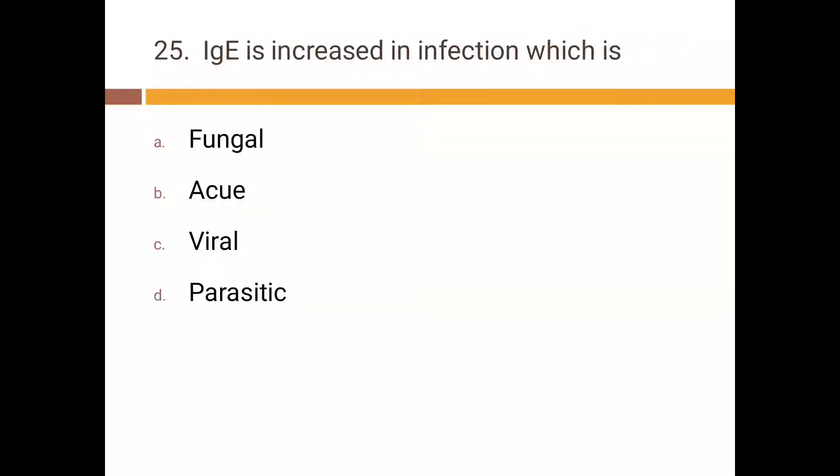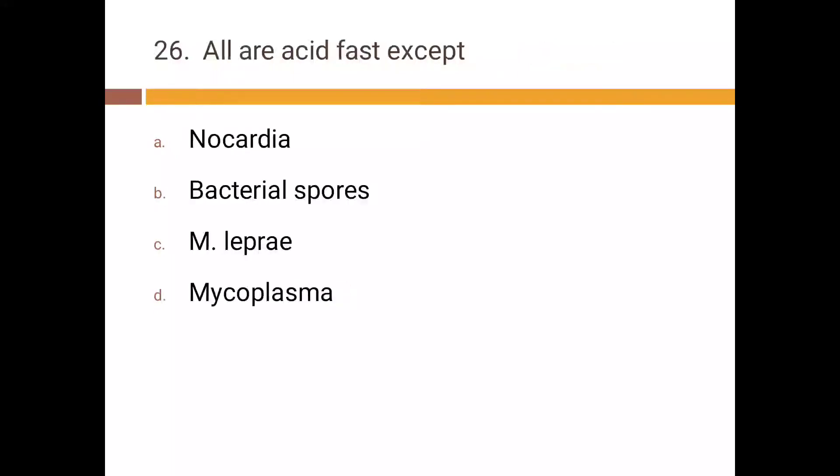IgE is increased in infection which is: a) fungal, b) bacterial, c) viral, d) parasitic. Correct answer is d) parasitic. All are acid fast except: a) Nocardia, b) bacterial spore, c) M. leprae, d) mycoplasma. Correct answer is d) mycoplasma.